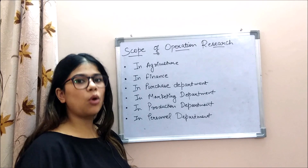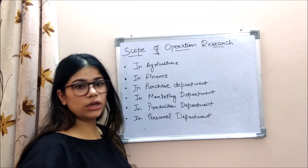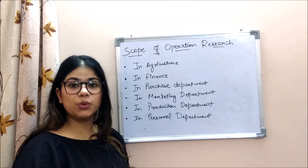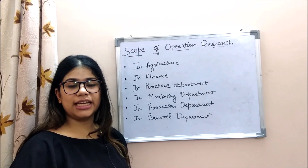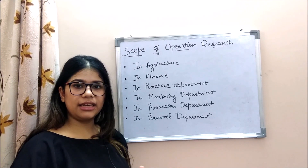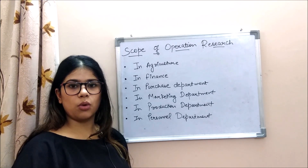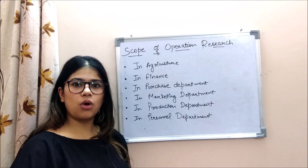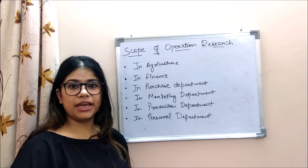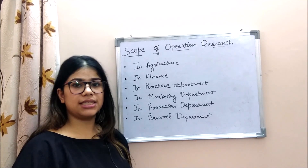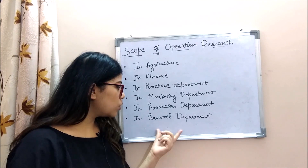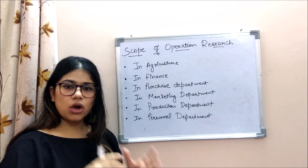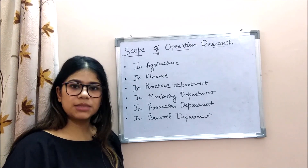The last scope point is the personnel department. The personnel manager uses OR techniques to check salary structures, the best age of retirement, and to identify which employees will work most efficiently.